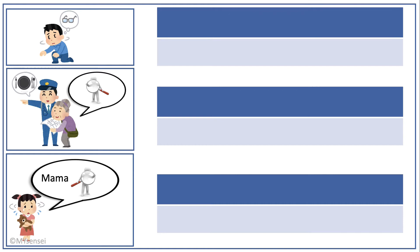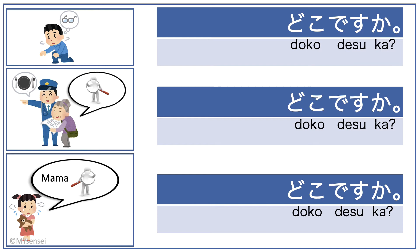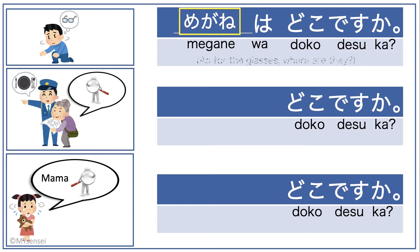The individuals are looking for something or someone. They would all say 'doko desu ka,' which means 'where' or 'where is it.' For the top image, he is looking for his glasses. He can expand his sentence saying, 'Megane wa doko desu ka' — where are my glasses.